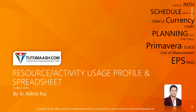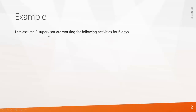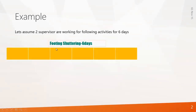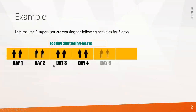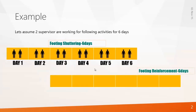Before going into it I'll explain a very simple example. Let's assume two supervisors are working for the following activities for six days. That is, for footing shuttering, two supervisors are working per day — day one through six. And on day three another activity is starting, that is footing reinforcement, where two supervisors are working per day.